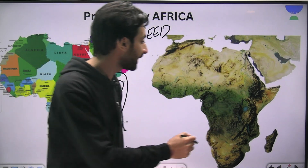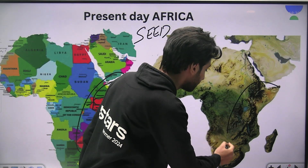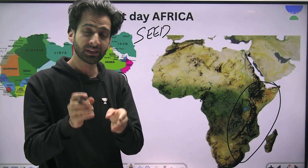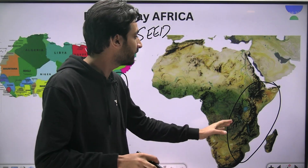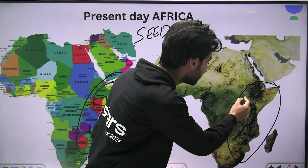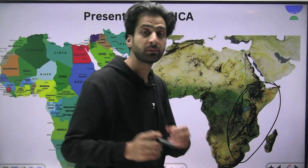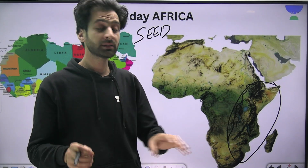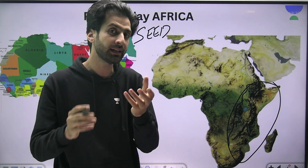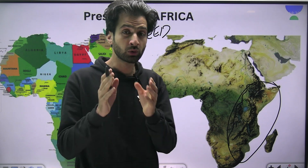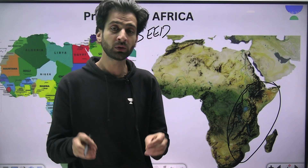Now let's look at the region we are primarily talking about — the region that is going to separate from Africa. This region has a lot of mountains and lakes, and it is vulnerable to a lot of earthquakes and volcanic activity. Why is all this happening in this region? To understand that, we have to dig a bit deeper and go to the interior of the Earth.